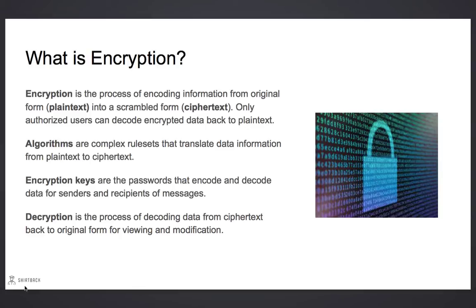Encryption is the process of encoding information from its original form into a scrambled form. The original form of data information is called plain text. The scrambled form is called ciphertext. Only authorized users can decode encrypted data back to its plain text original form.